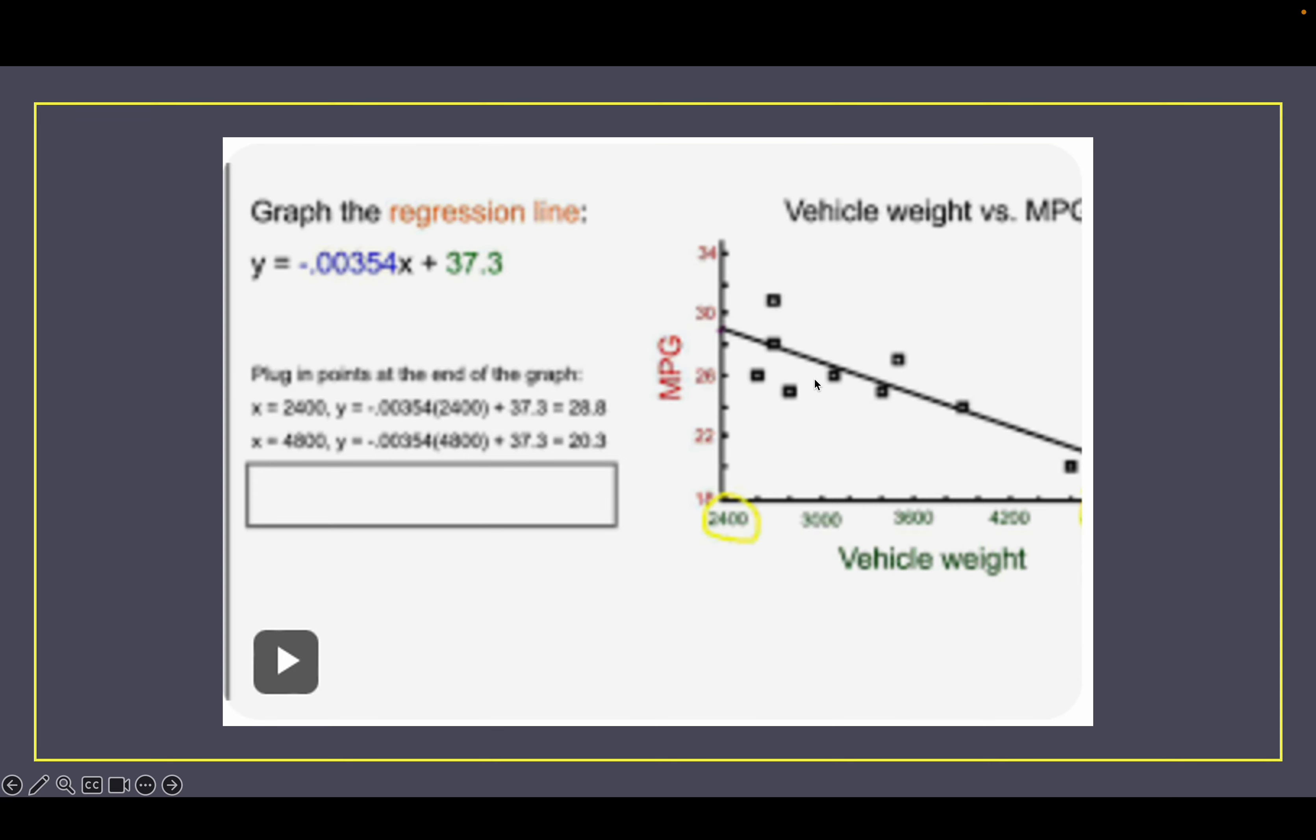Here's another one. This would be a negative correlation coefficient, but they draw that line of best fit. They put the data in the calculator and after they put all the points in, they get y equals negative 0.00354x plus 37.3. If you want to find the value when x is equal to 2400, you just plug a 2400 into that equation.